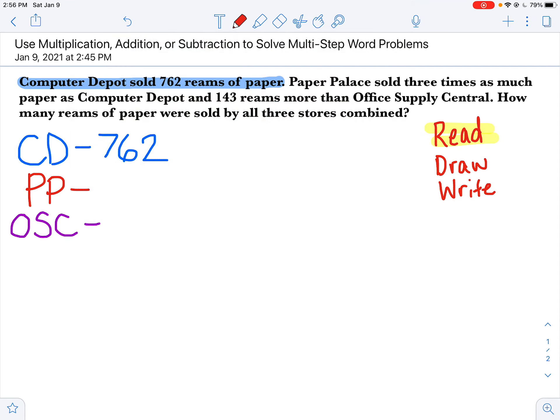Now let's take a look at our next one, Paper Palace. Here we go. I'm going to look at the next sentence. Paper Palace sold three times as much paper as Computer Depot and 143 reams more than Office Supply Central. Well, did you notice I stopped highlighting after a minute? It's because that second part—143 reams more than Office Supply Central—that's not going to help me figure out how many pieces of paper, how many reams of paper, Paper Palace sold. That's going to help me find out how many reams Office Supply Central sold. I can figure out how many reams Paper Palace sold by just looking at that first part of the sentence. They sold three times as much as Computer Depot.